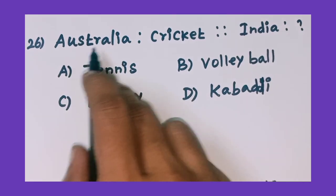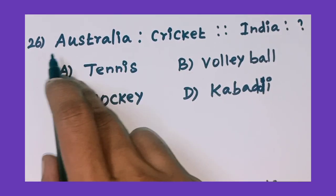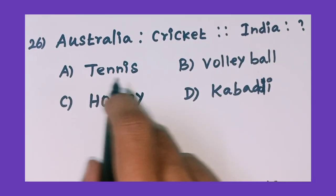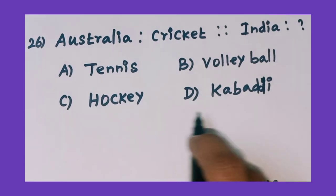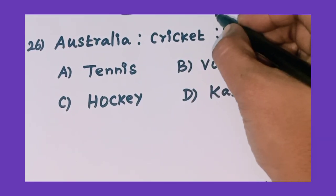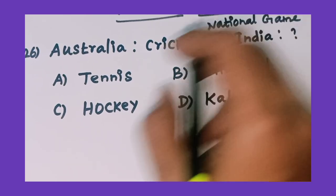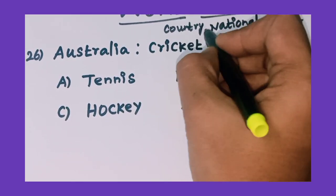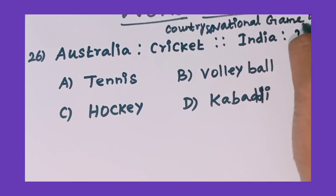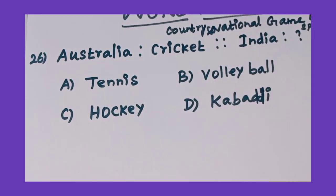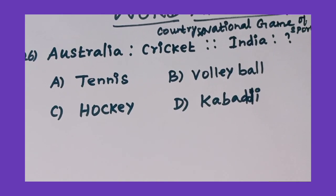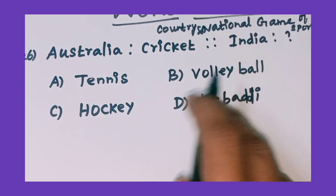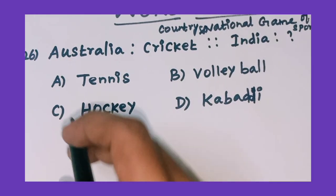The analogy is country and national games. Australia ratio cricket, proportion India ratio — question mark. Option A: tennis, option B: volleyball, option C: hockey, option D: kabaddi. The concept is national game of sports. Australia's national game is cricket, and India's national game is option C: hockey.